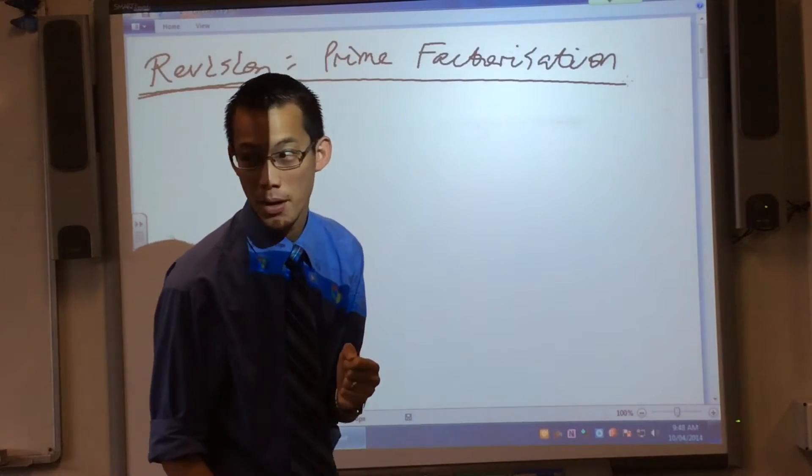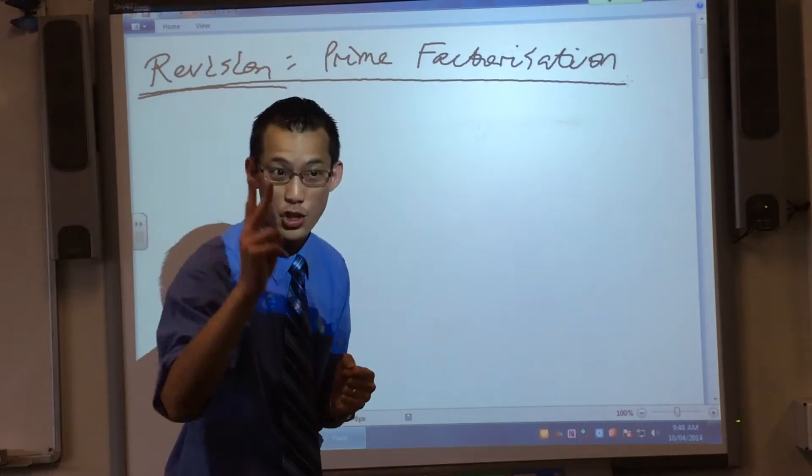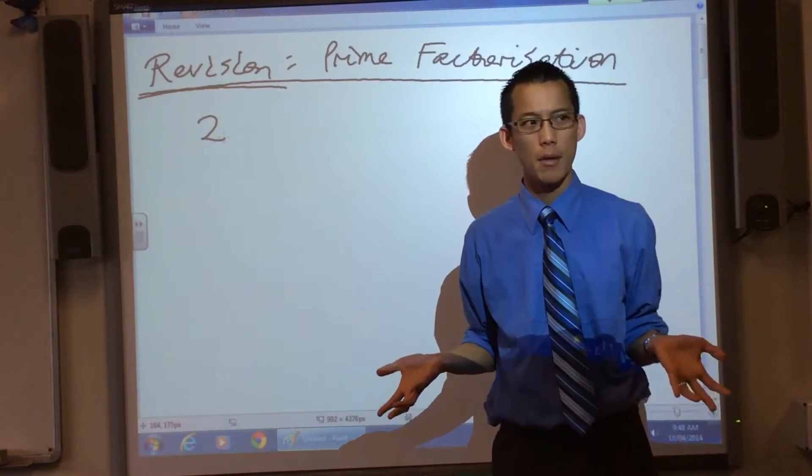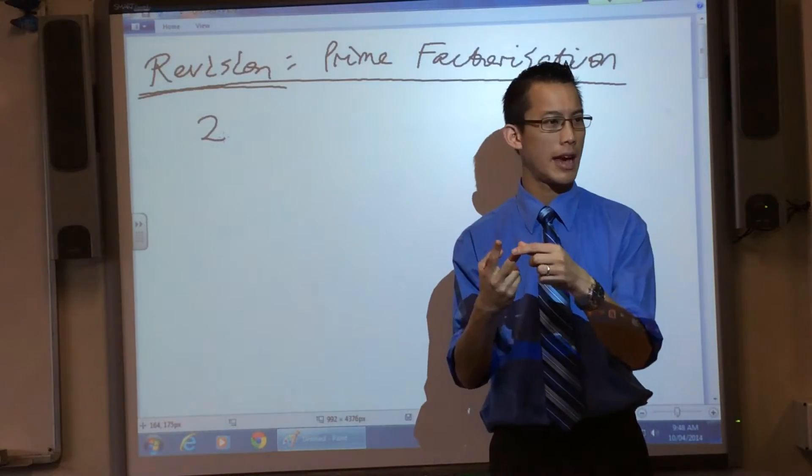What's the very first prime number? Do you remember? Yeah, it's two. That's right. Now that raises the question, why isn't one prime? Because you can divide it by one in itself. Yeah, no one.